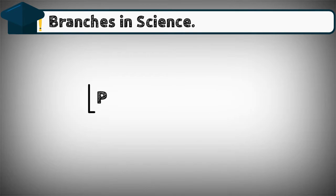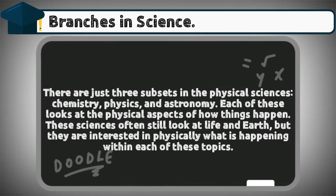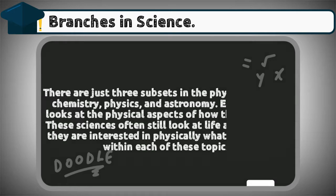Physical sciences. There are just three subsets in the physical sciences: chemistry, physics, and astronomy. Each of these looks at the physical aspects of how things happen. These sciences often still look at life and Earth, but they are interested in physically what is happening within each of these topics.